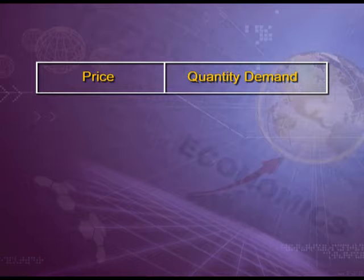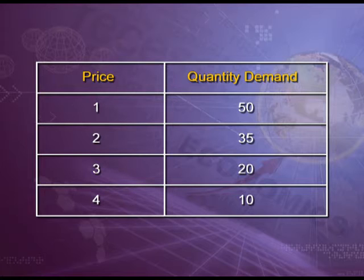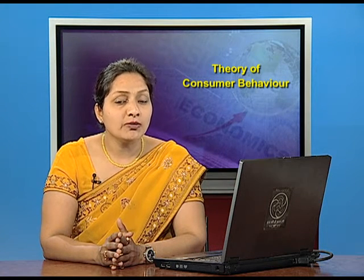Let us take another example to explain this law. Draw a table with two columns — one for price and one for quantity demanded. Prices are rising from 1, 2, 3, and 4, and quantity demanded is decreasing as 50, 35, 20, and 10. Analyzing the table: as price per unit increases (1, 2, 3, 4), the quantity demanded falls (50, 35, 20, 10). Remember, the law of demand is a qualitative statement and not a quantitative one.